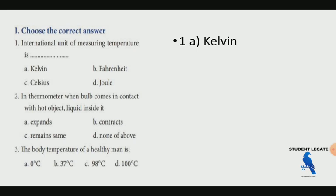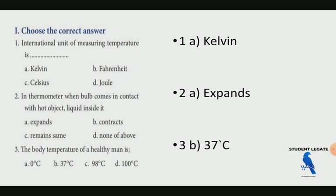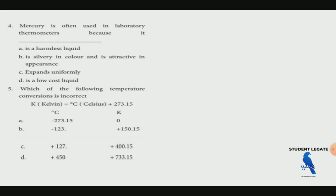In a thermometer, the bulb comes in contact with the hot object. The liquid inside it expands when put in a hot object, so the temperature reading rises. The body temperature of a healthy human is 37 degrees Celsius. Mercury is often used in laboratory thermometers because it expands uniformly, so we use it in laboratory thermometers.